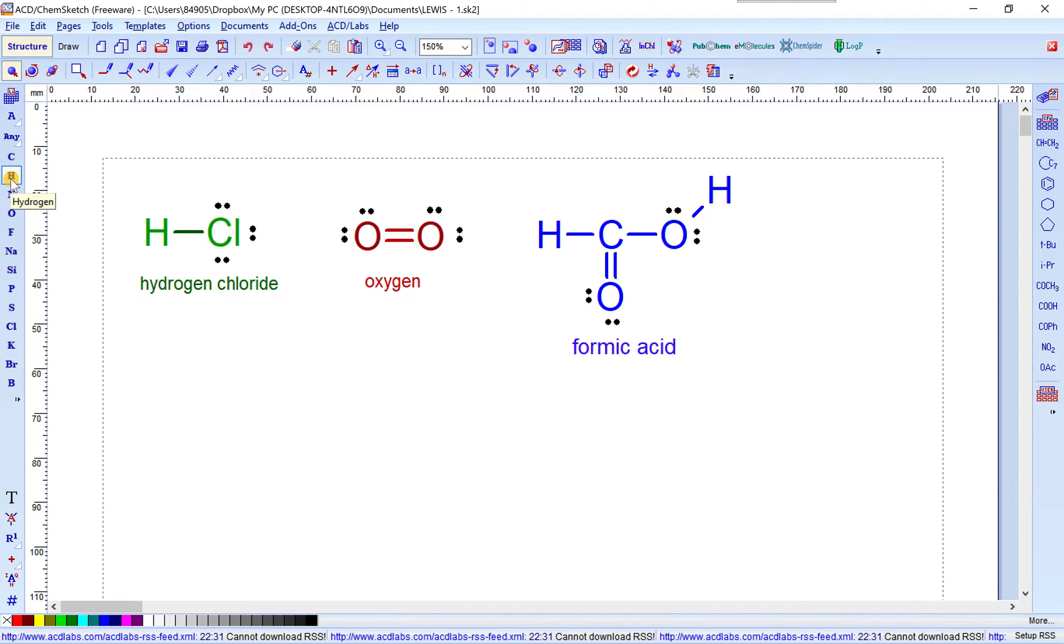Left click on hydrogen and then chlorine, hold down the left mouse and drag out. We have the structural formula of hydrogen chloride HCl. What we need to do now is to find six valence electrons on chlorine atom.